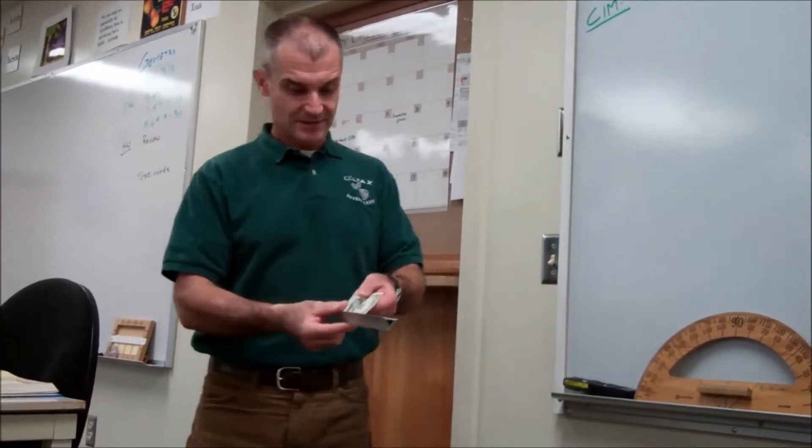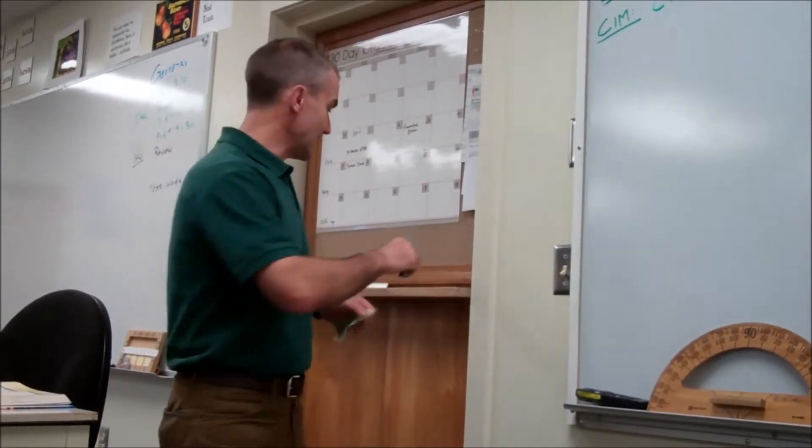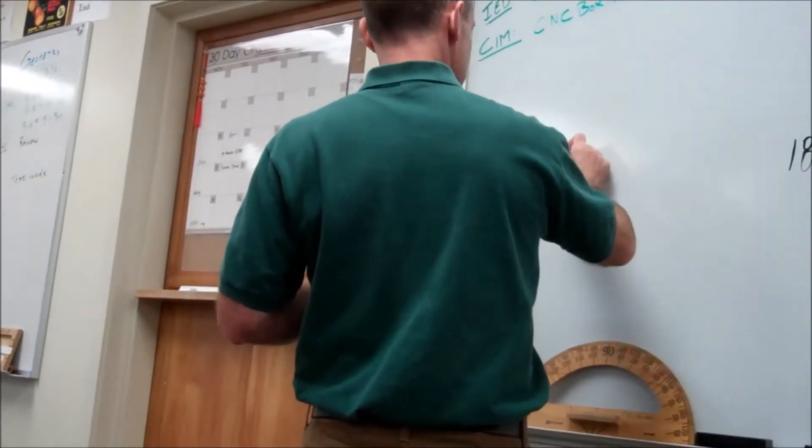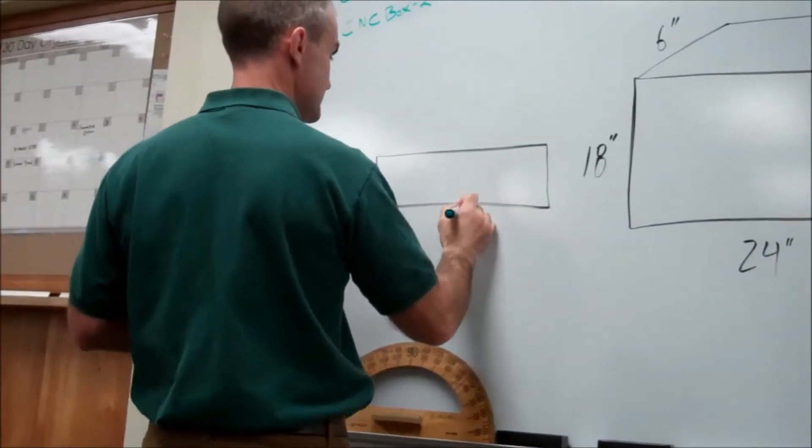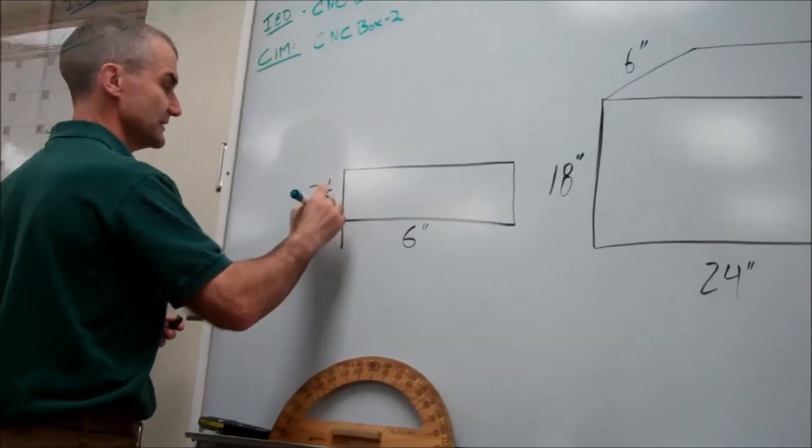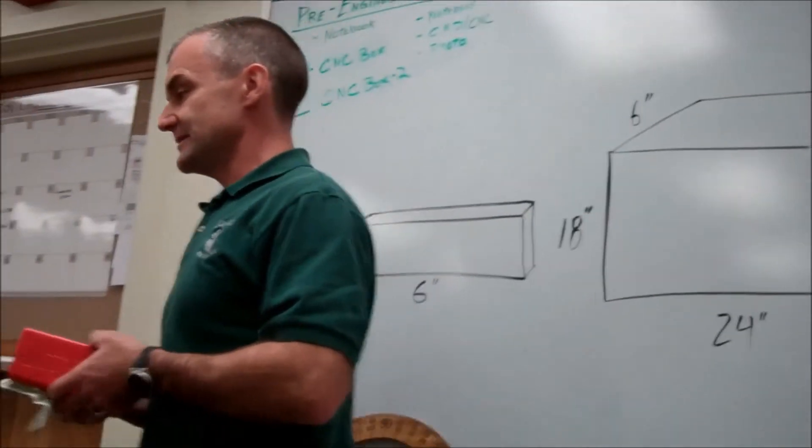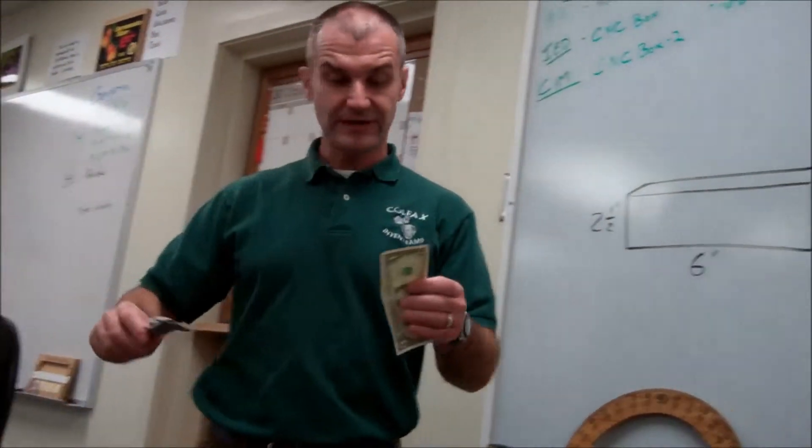Is it? So it's a dollar bill six by two and a half. So here's my dollar bill, which is six inches by two and a half inches. That's exactly right. It's a volume problem, Landon. So I need to know the thickness of a dollar bill. Right?